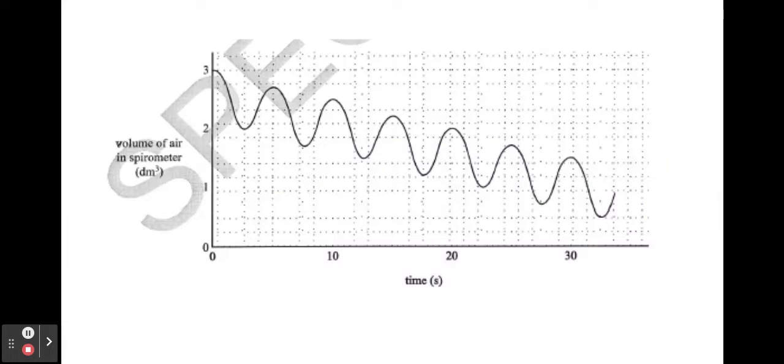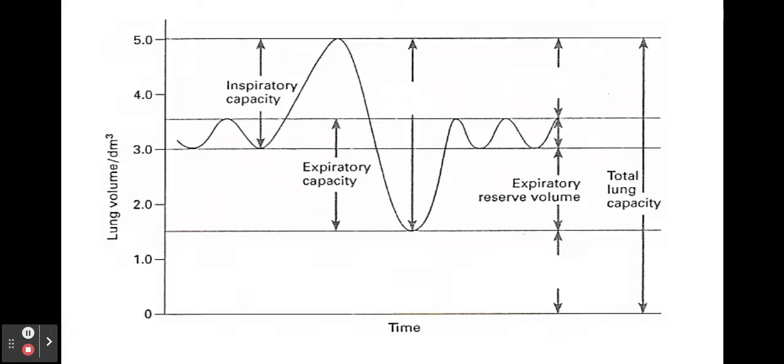This is an example of a trace that you get from a spirometer. You need to be able to label these different things. The vital capacity is the maximum volume of air a person can breathe in and out in one breath. This is the air that you force in and force out.